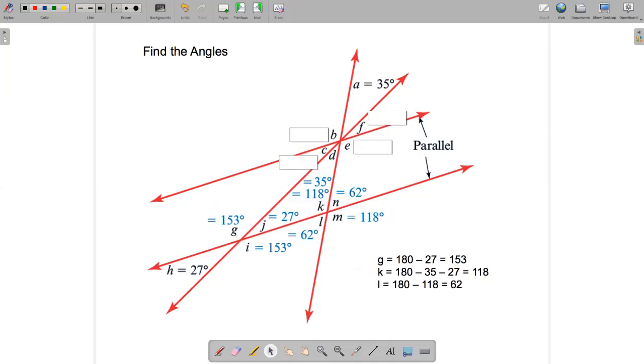Let's use the parallel postulate for corresponding angles to figure out some of the others. That says if we've got two parallel lines, and we have a line crossing them, then we're going to have corresponding angles that are equal. So let's find some corresponding angles. M and E are corresponding. So E must be 118.